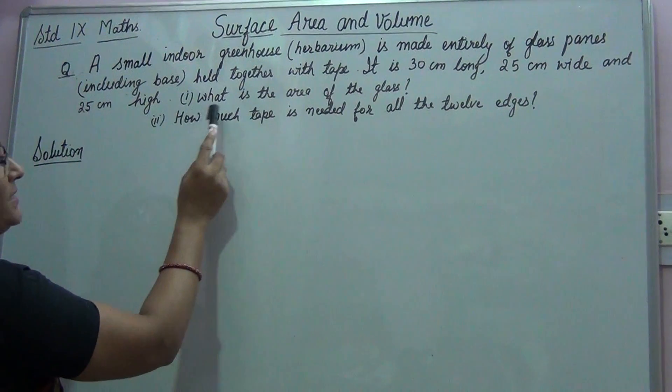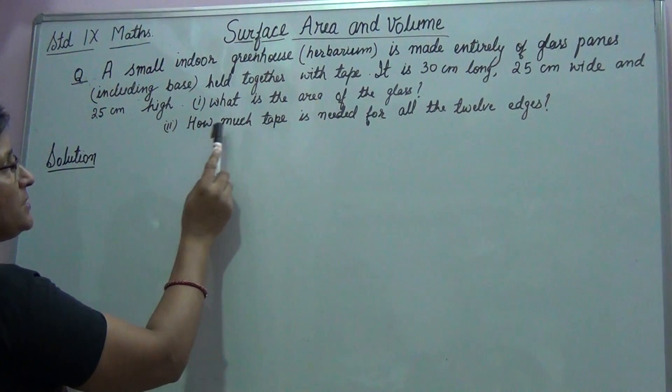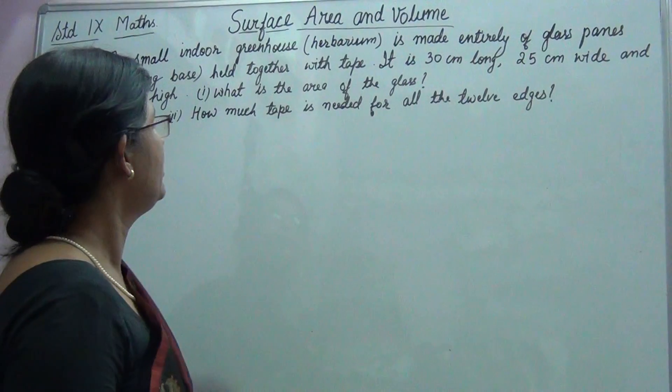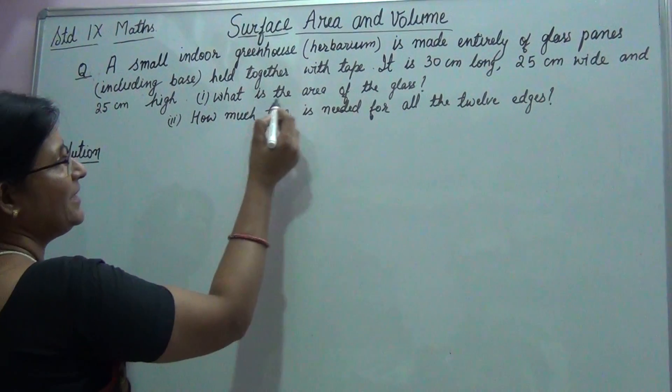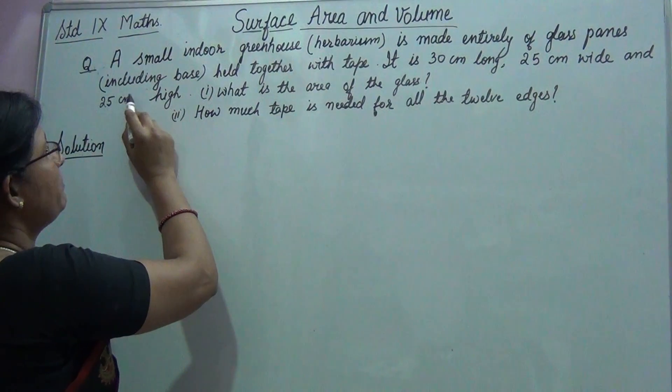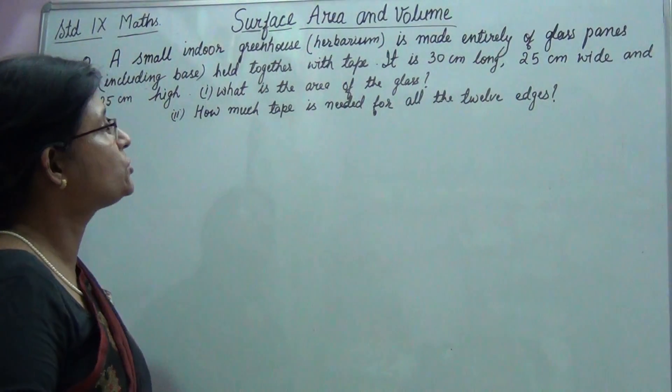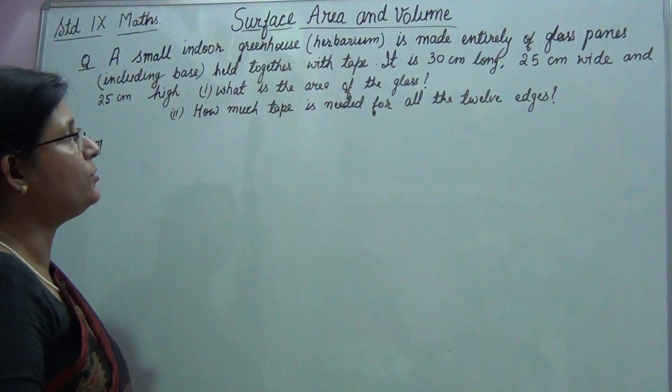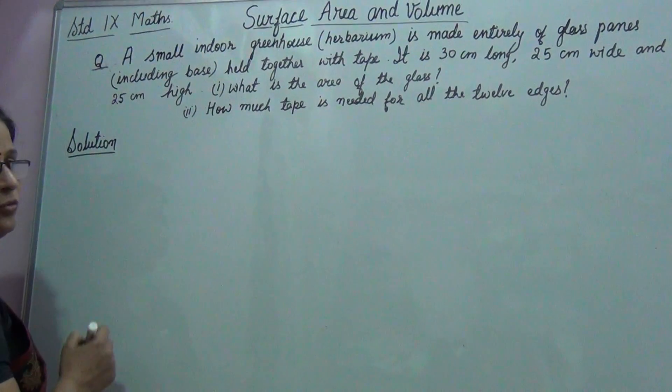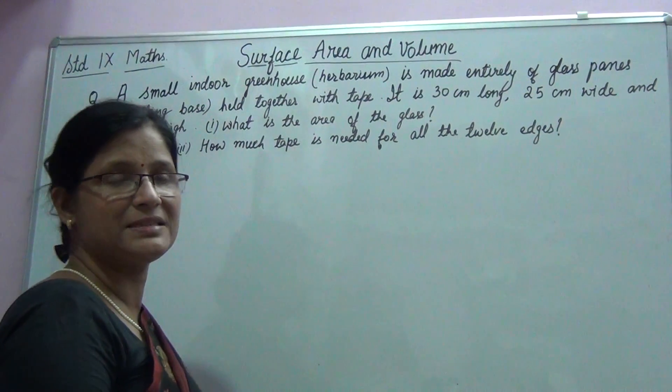What is the area of the glass and how much tape is needed for all the 12 edges? Now the first part is what is the area of the glass. Children, it is already given in the question that base is included, so the greenhouse has six faces in all. So for that we need to find total surface area.